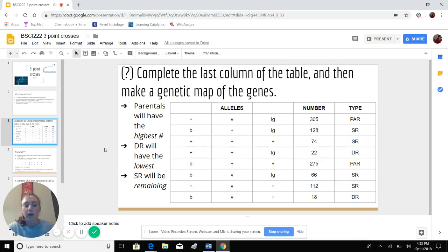So you see here we have 305 and 275 and those are the two parentals. The double recombinants will have the lowest numbers and that here is 22 and 18 and the single recombinants will be the remaining. So that is the 128, 74, 66, and 112. So we start by doing that. We get a basic outline of which are the parentals, which are the double recombinants, and which are the single recombinants.